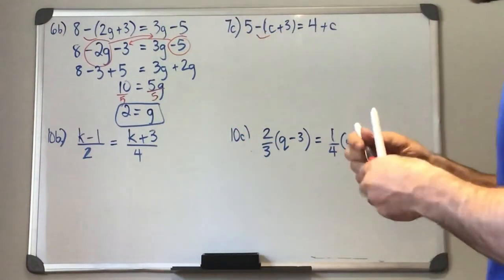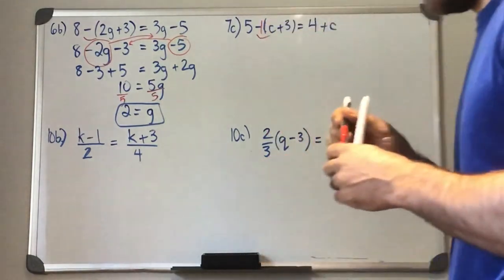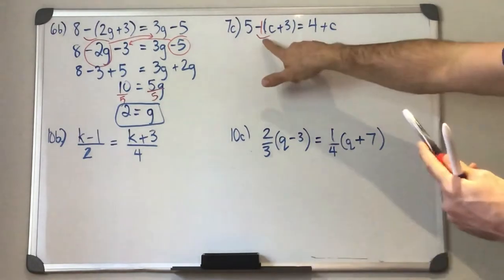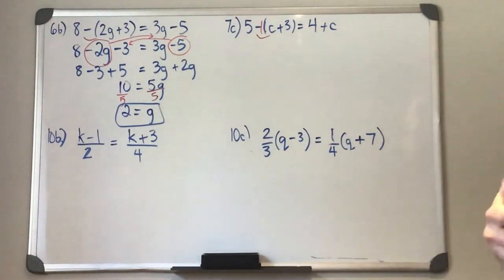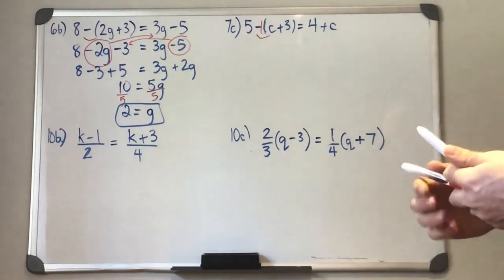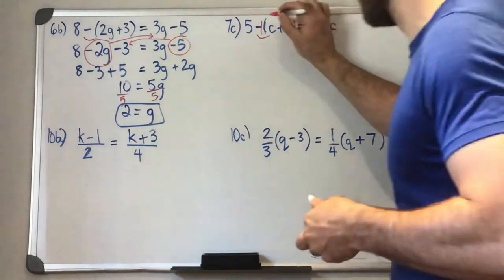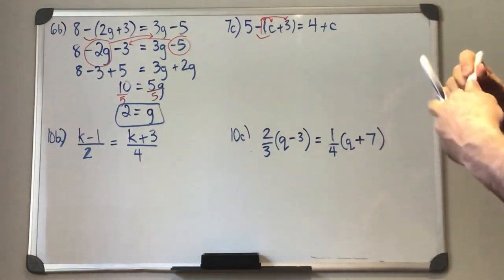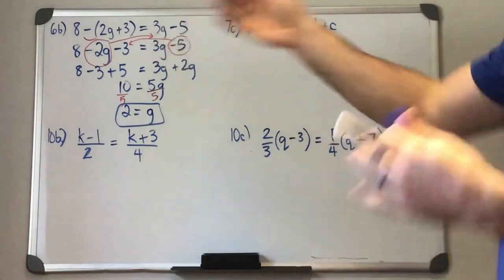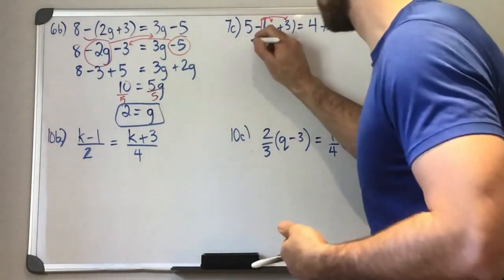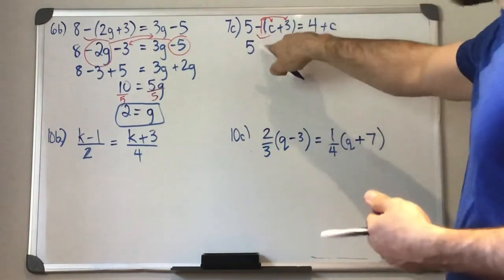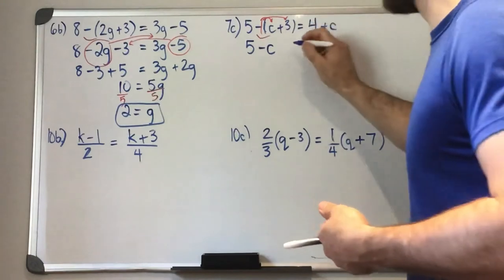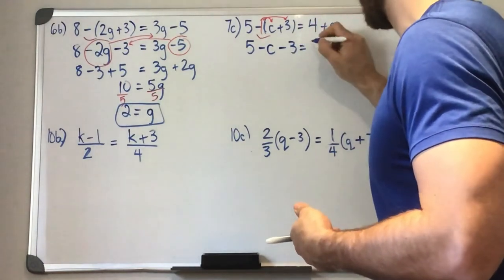Our second method that we used towards the end of our school days there was you can imagine there being a negative 1 in front of the set of brackets and then use the distributive property from there. And this will give you the same result as kind of flipping the signs, but some students might like this one better. Negative 1 times C is negative C. Negative 1 times 3 is negative 3.